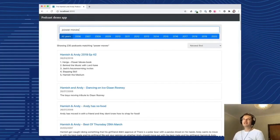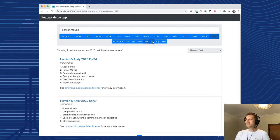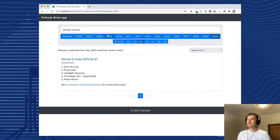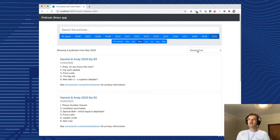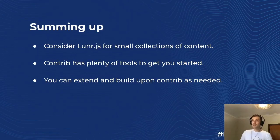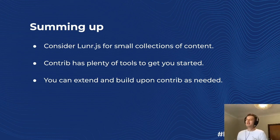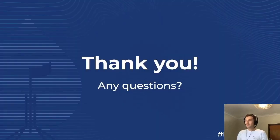Here's a demo of that: a decoupled React frontend for Drupal where all of the content on the page comes from a Luna index. I've added features like faceting by date, while still having the ability to search the whole index by typing a search query. To sum up, LunarJS is a great choice if you have small collections of content — nothing too massive. There are plenty of tools in contrib to get you started fast, and you can build and extend upon those solutions to add your own functionality. Thank you for making it this far — any questions, I'd be glad to hear them.